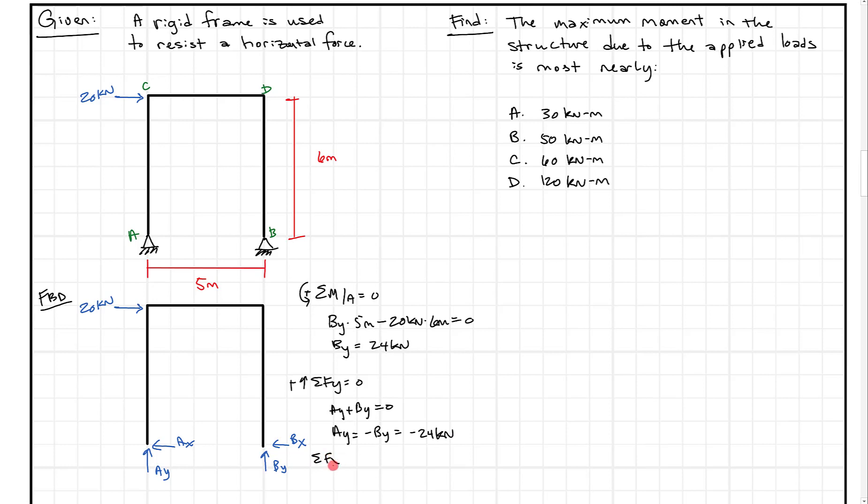And then our last equation, sum of the force in the X direction equals zero. We get 20 kilonewtons minus AX minus BX equals zero. And that's where we run into a problem, because AX and BX are both unknown. Now we could make an assumption and say, well, AX has to equal BX. And I guess, is that a good assumption? I don't know. Pause the video for a second. Think about it. So did you think about it? I mean, is that a good assumption? Should AX equal BX? If so, why?